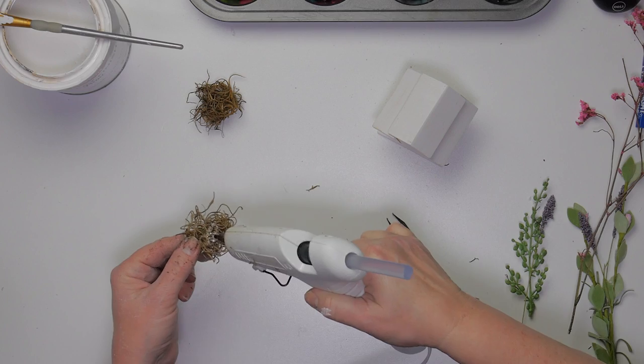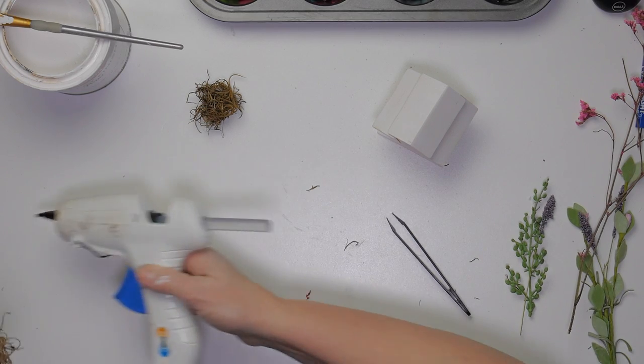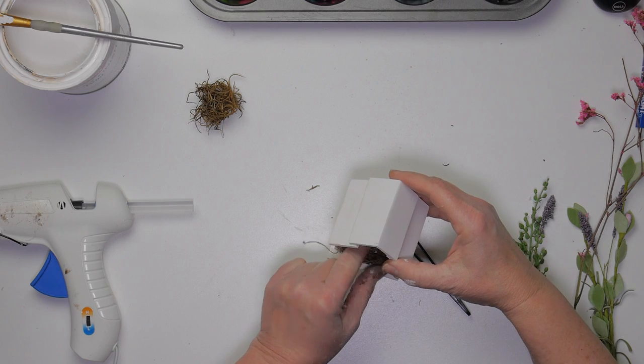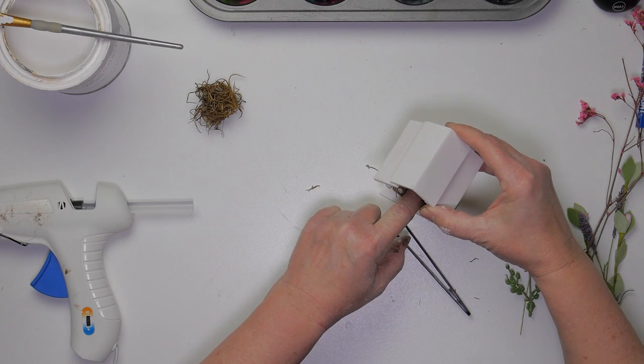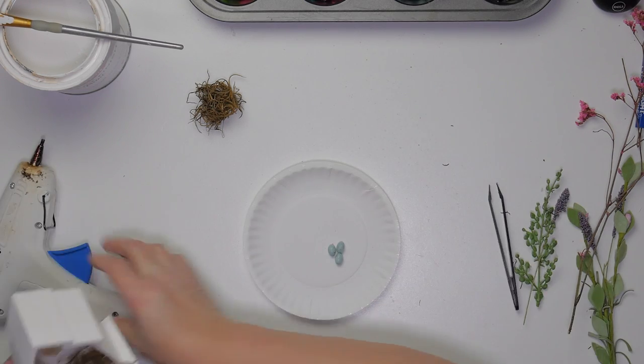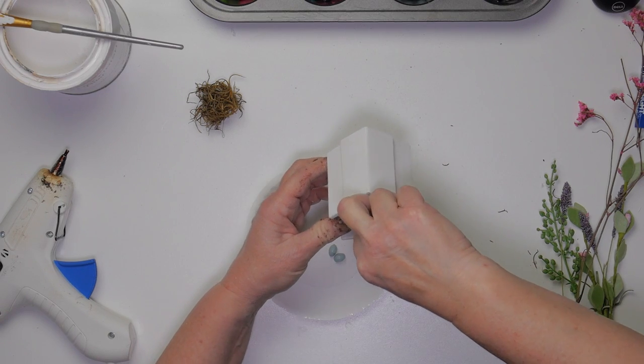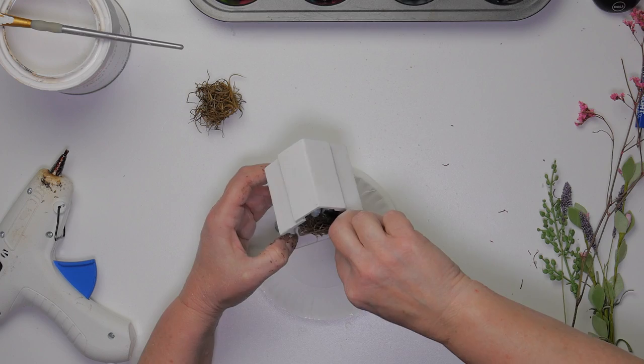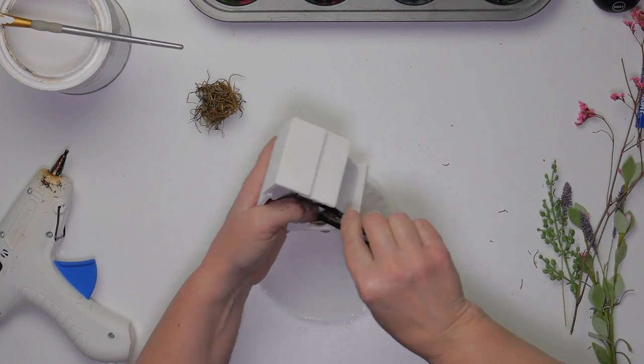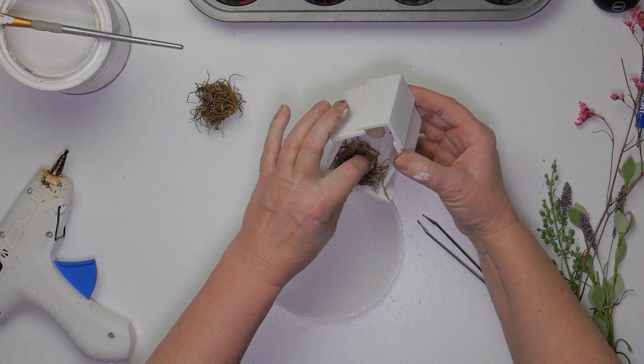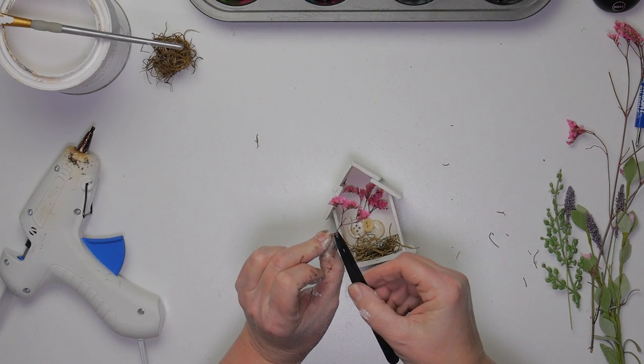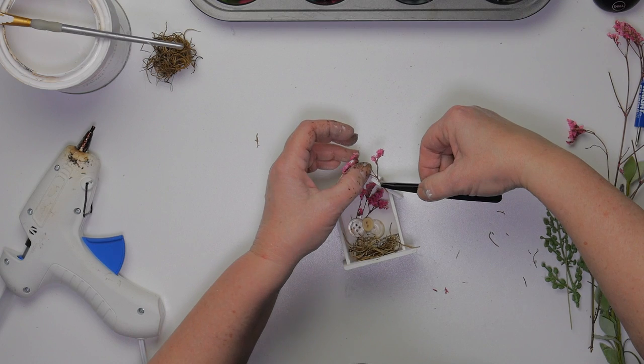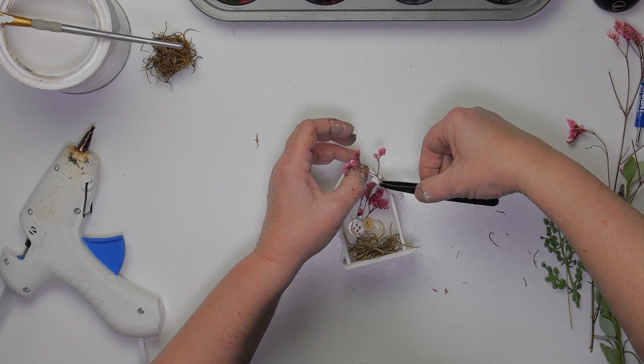I'll go ahead and glue the bird's nest inside as well as the speckled eggs. I dyed these with blue paint and then I did a little splatter on them with black paint to make a speckled egg. I glue some more flowers on the outside and then I also add a couple more buttons.